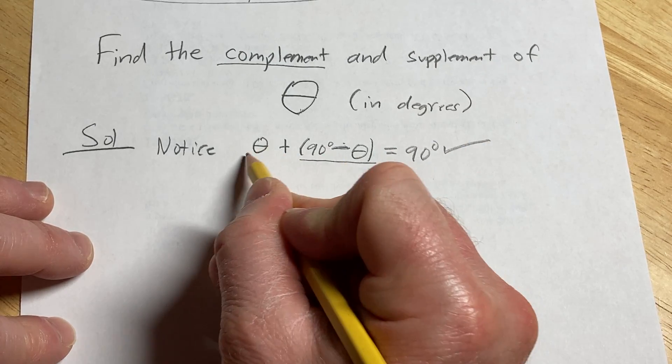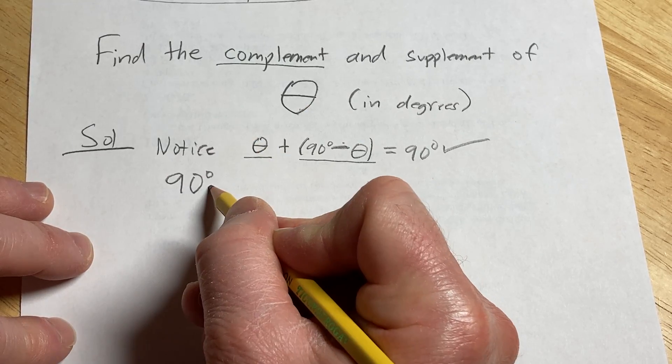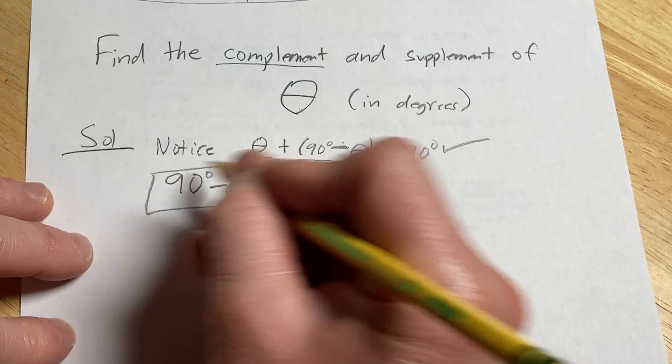So these angles are complementary, and the complement of theta is going to be 90 degrees minus theta. This is the complement.